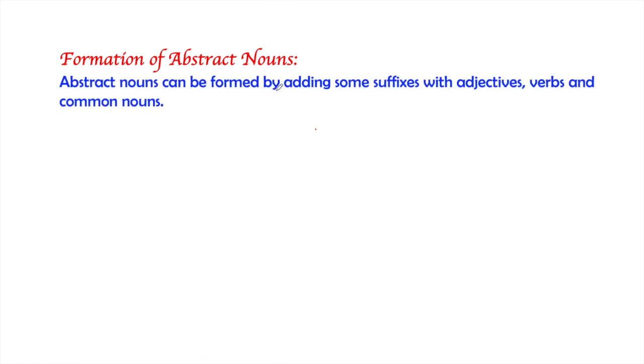Let's see how to form abstract nouns. Abstract nouns can be formed by adding some suffixes with adjectives, verbs, and common nouns. Suffixes are the words which are added with the word in the last.